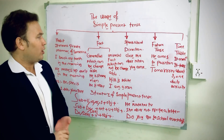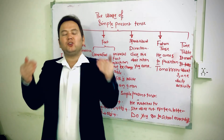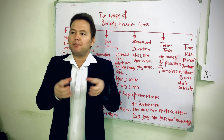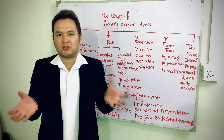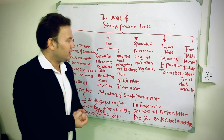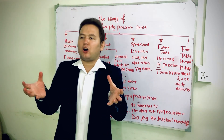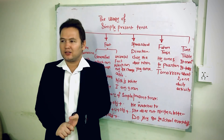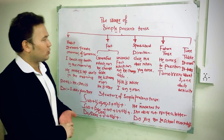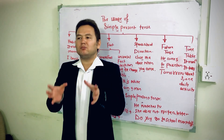The third usage is direction. When we are at school, at the university, at the office, or at home, some people guide or instruct us. We use simple present tense for directions. For example: 'Close the door when you come,' 'Switch off the light when you leave the class,' 'Come to the house before evening.' These are called directions.